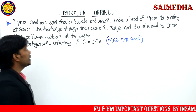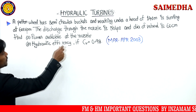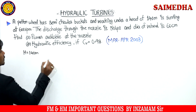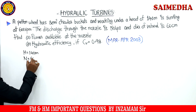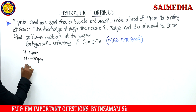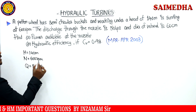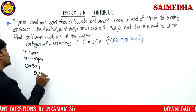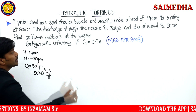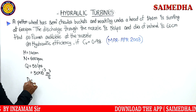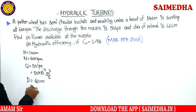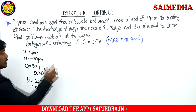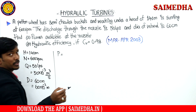Now observe the next question. A Pelton wheel has a semicircular bucket working under a head of 140 meters, running at 600 RPM. Discharge Q = 50 liters/second = 50 × 10⁻³ m³/s. Diameter of the wheel capital D = 60 cm = 60 × 10⁻² m. We need to find the power available at the nozzle.